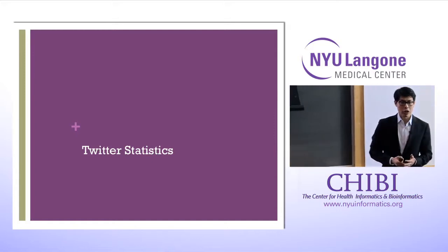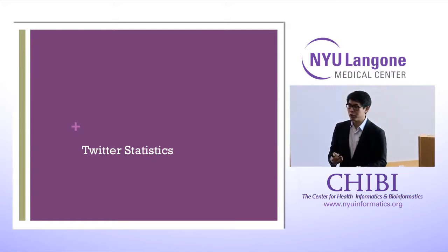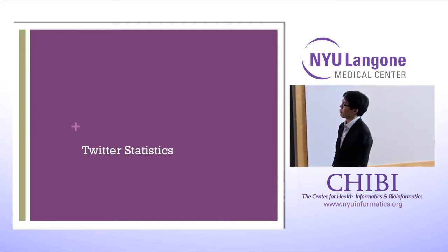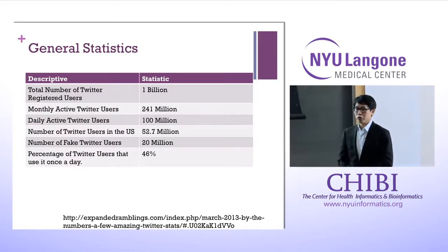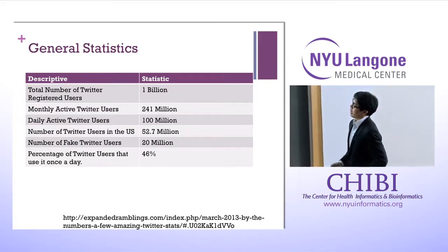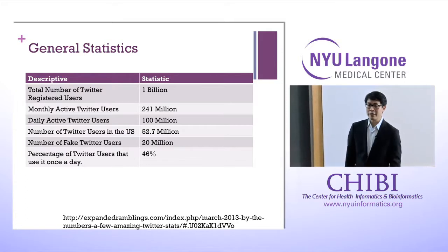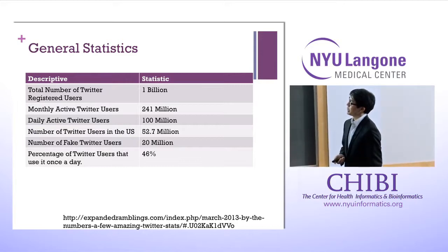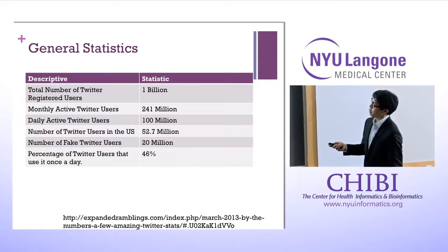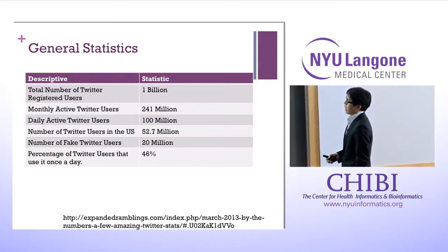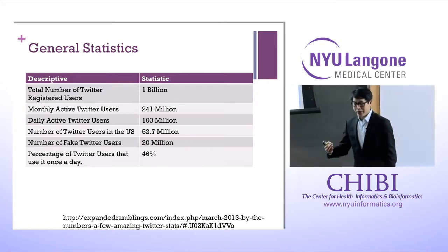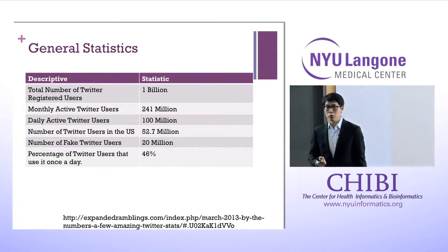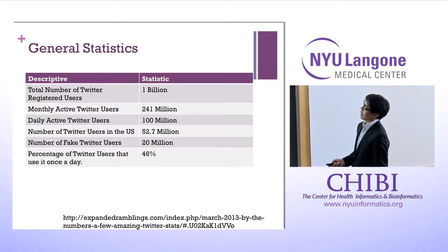Let's talk about what kind of data is in there, who the users are, types of tweets, and broad statistics. There are close to a billion registered users, of which 241 million are active every month, with 100 million active every day. The number of Twitter users in the U.S. is 52.7 million. There are 20 million fake users. As we're building health applications, these are important things to know about your audience.